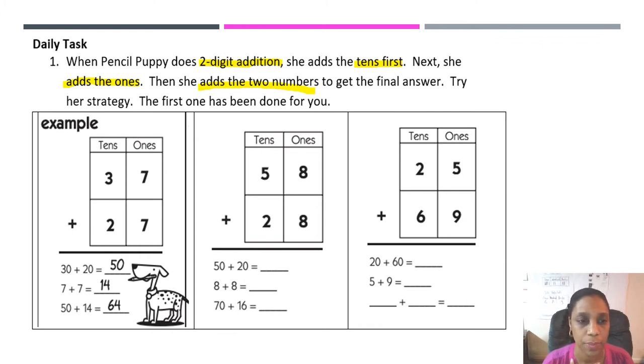37 plus 27. First, she adds the tens. So therefore, she's going to add three tens plus two tens. Three tens is 30 and two tens is 20. When I add 30 plus 20, I end up with 50. Then she adds the ones. Seven ones plus seven ones is 14 ones. Next, she adds the two sums of those two problems together. She adds 50 plus 14, and she comes out with an answer of 64.